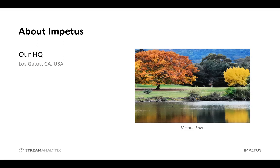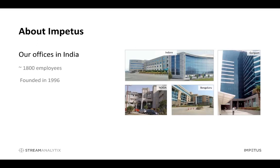We are headquartered in Los Gatos, California, with offices in India — 1,800 employees total. We were founded in 1996, and are a continuously profitable and growing organization. We have a migration platform for moving workloads from ETL jobs on traditional data systems to big data. We also have our sister company Kiwos Insights, an amazing BI on Hadoop platform. With that brief commercial about Impetus, let me move on to the topic.